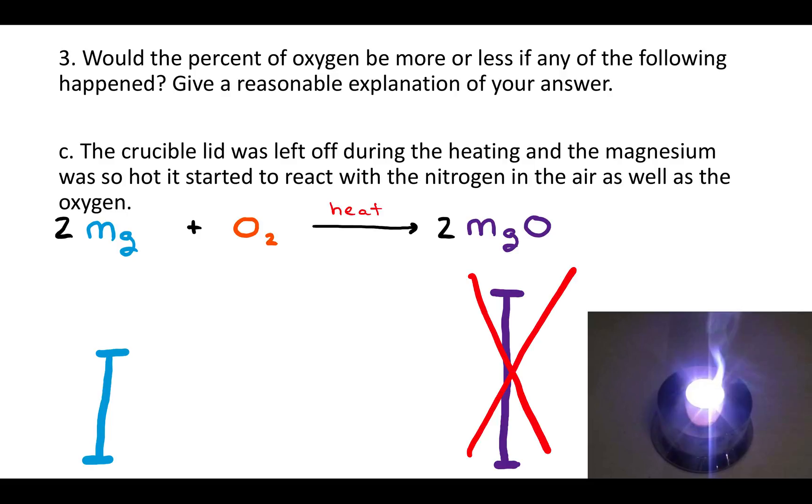If you think of it as there's only so much space around the magnesiums, and if you fill that space up with nitrogens, there's not going to be as much space for oxygen. So the amount of magnesium oxide that you'd have would be less. So does that mean that the percent of oxygen is bigger or smaller than it otherwise would have been?